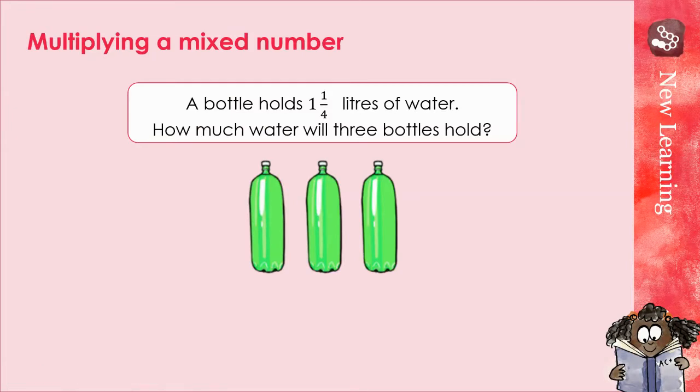What we are going to do now is work out how to multiply a mixed number. This is quite simple if we just follow the step by step instructions and we work out just how to add on to what we learned yesterday. Let's have a look at a problem together.